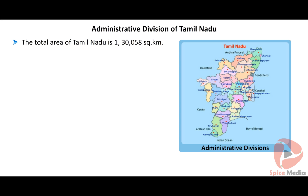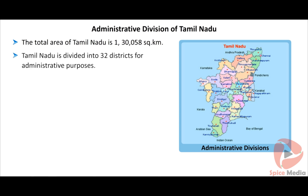The total area of Tamil Nadu is 1,30,058 square kilometers. Tamil Nadu accounts for 4% of the total area of India. Tamil Nadu is divided into 32 districts for administrative purposes.